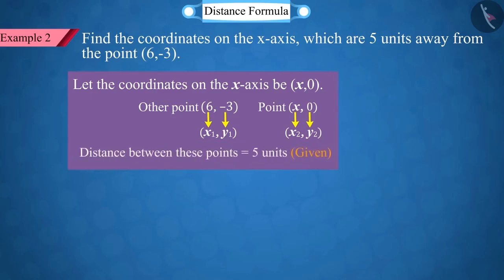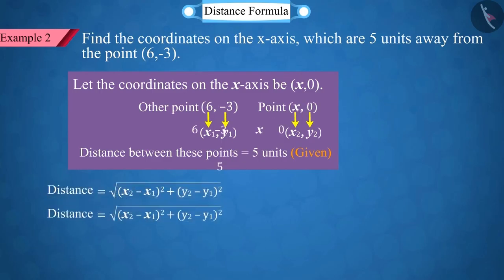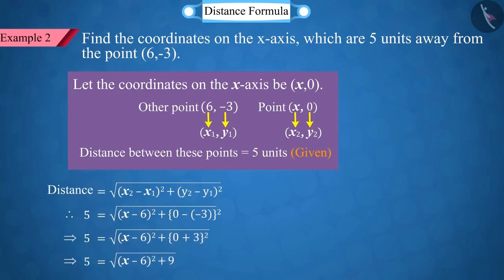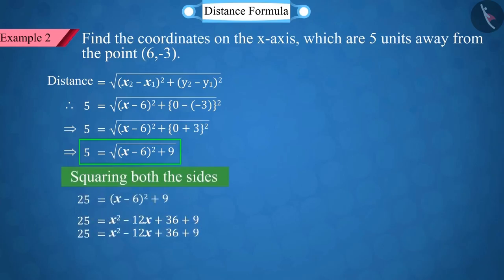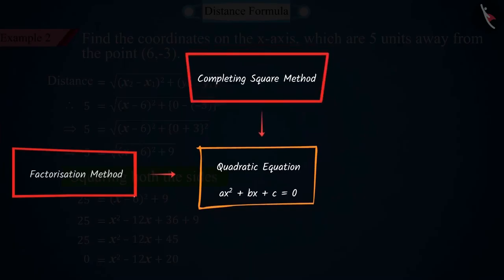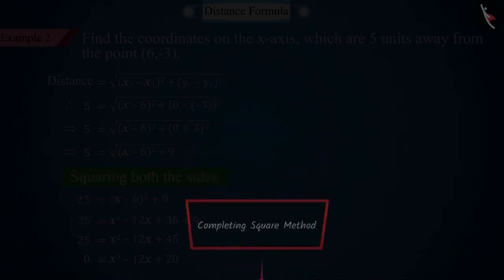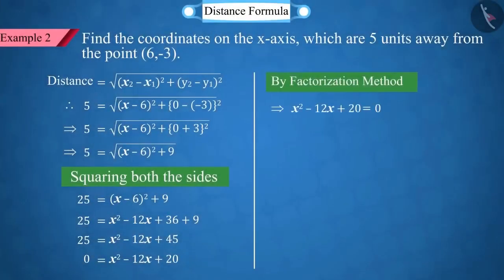Note that the distance value has already been given here. Putting all the values in the distance formula, an equation is found. Squaring both the sides of this equation, we get a quadratic equation. You must remember that we have already studied many methods of solving quadratic equations. Here, we solve the quadratic equation by the method of splitting the middle term, from which we get two values of x, that is, x is equal to 2 and 10.